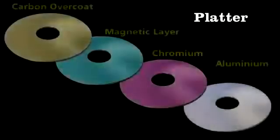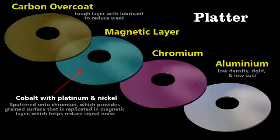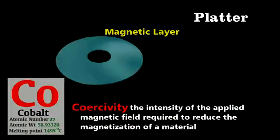The key element of the platter is the magnetic layer, which is cobalt with perhaps platinum and nickel mixed in. Now, this mixture of metals has high coercivity, which means that it will maintain that magnetization, and thus data, until it's exposed to another powerful magnetic field.